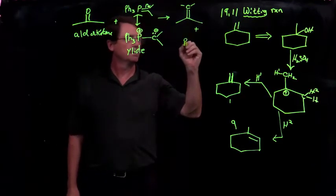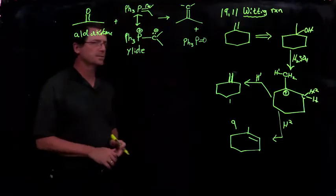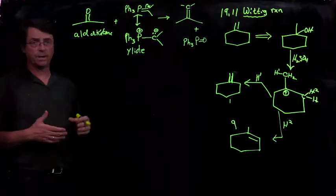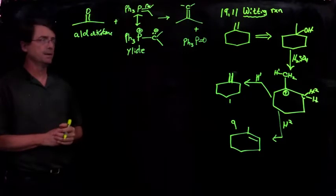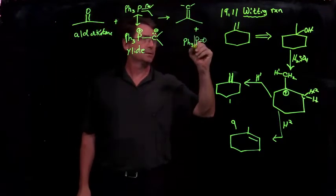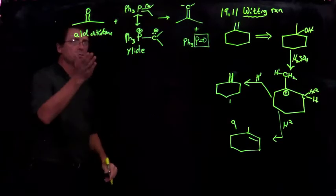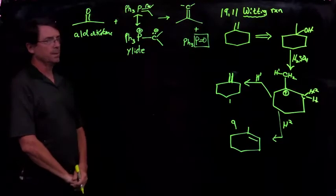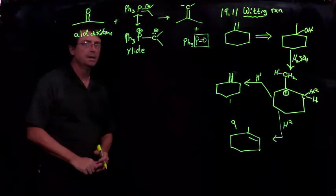Now, the other product here is triphenylphosphine oxide and that phosphorus-oxygen double bond, we've seen it before, for instance, in phosphoric acid. That's one of the strongest bonds out there in nature. And this phosphorus-oxygen bond strength is one of the thermodynamic driving forces for this transfer of the carbon to the carbonyl compound and the loss of oxygen.